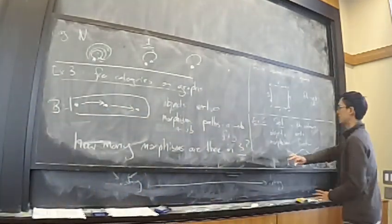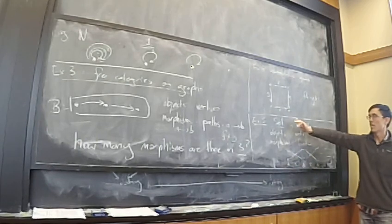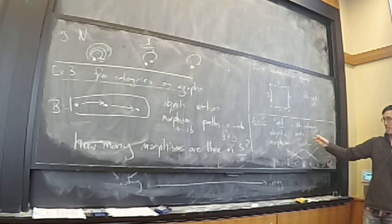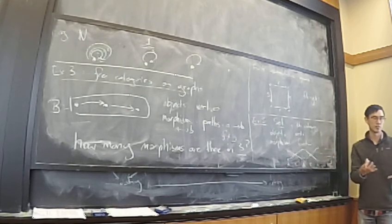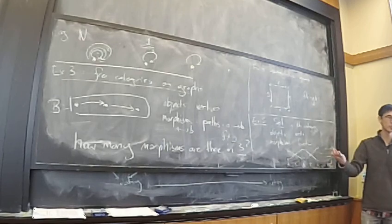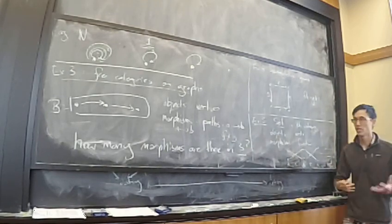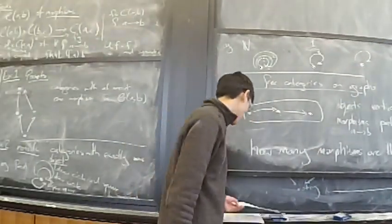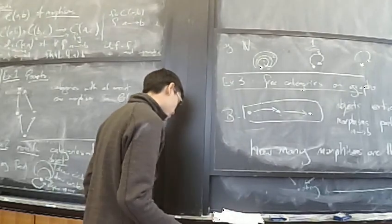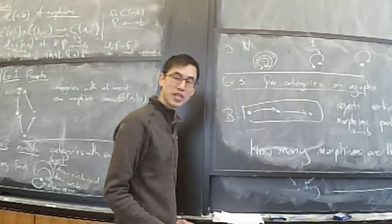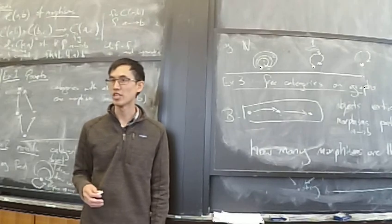Historically, this is how category theory arises: for every class of mathematical objects you have an associated notion of morphism. For sets, the right notion of map is a function. For groups, it's group homomorphisms. For vector spaces, it's linear maps. For topological spaces, it's continuous maps. All of these are very classical examples of categories.